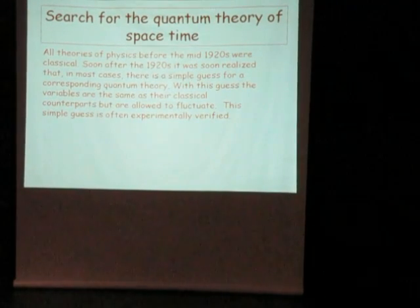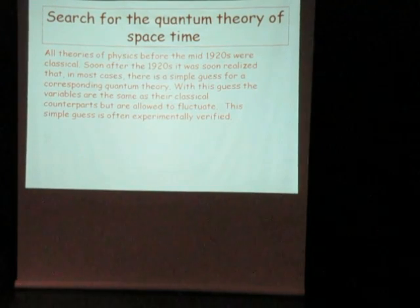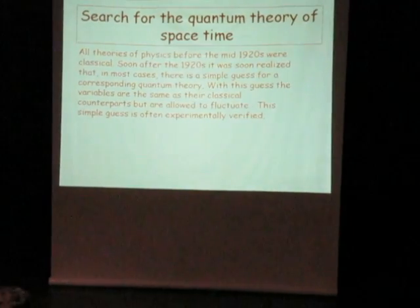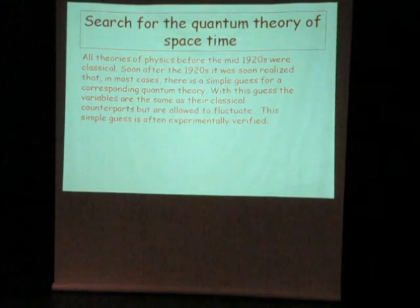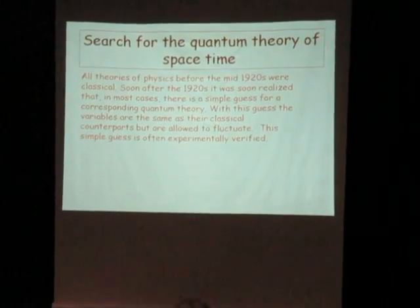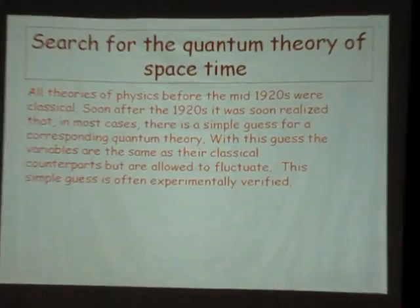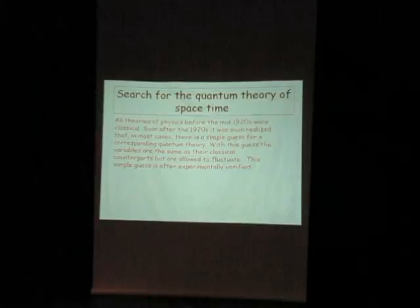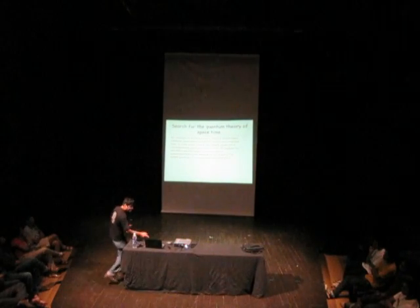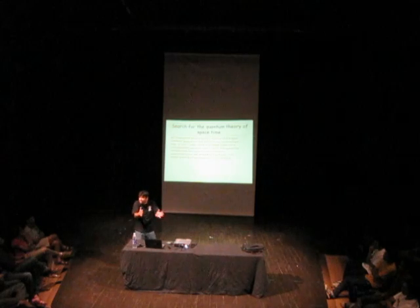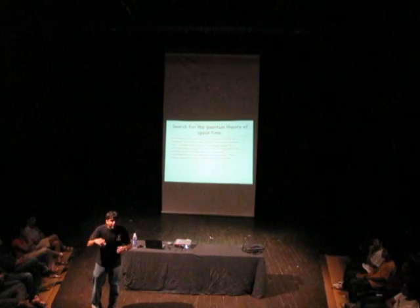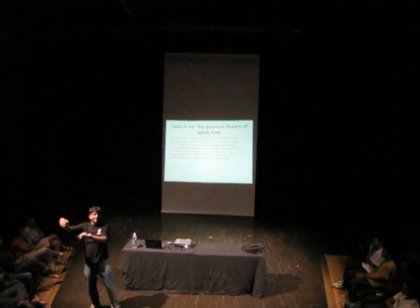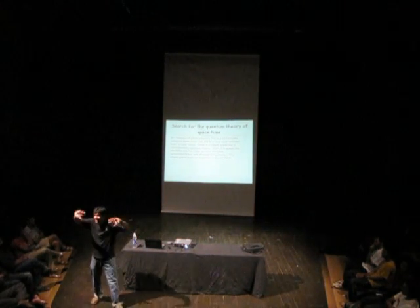All theories prior to the 1900s were classical theories where things had definite positions or velocities. Then quantum mechanics came and we realized things should fluctuate. If you have a whole body of physics based on definite positions and velocities, do you throw it all out and start fresh? No — you somehow modify those old theories to incorporate quantum mechanics. Physicists are pragmatic: you take something that works and generalize it. This worked for most theories — for instance, quantum electrodynamics gives beautiful results just by taking classical electrodynamics and letting things fluctuate.